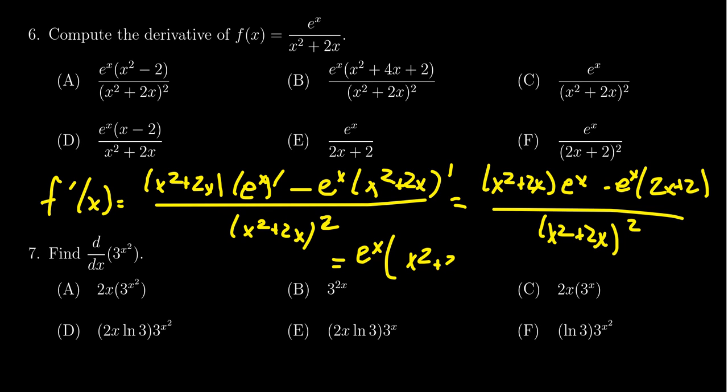We have x² + 2x, then we get minus 2x minus 2. Remember, this negative sign will distribute onto both of these pieces. And this sits above the denominator (x² + 2x)².